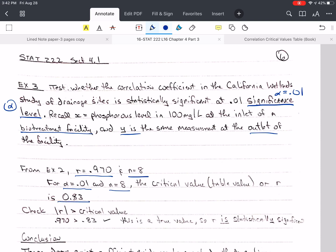So I look up that table value, and that's 0.83. Now I need to check, is the absolute value of R greater than the critical value? This is our, if this is true, then R is statistically significant.